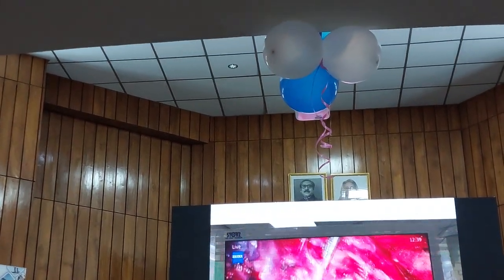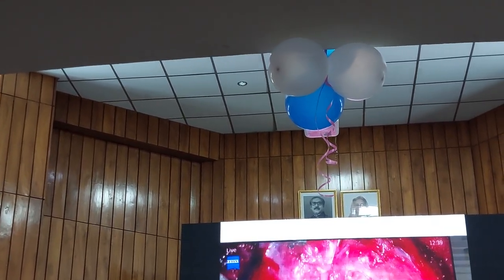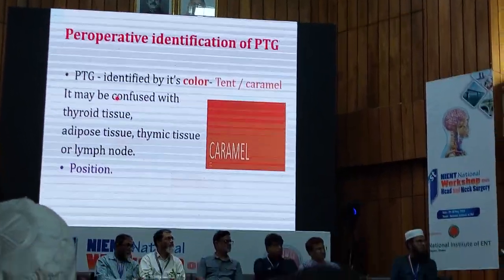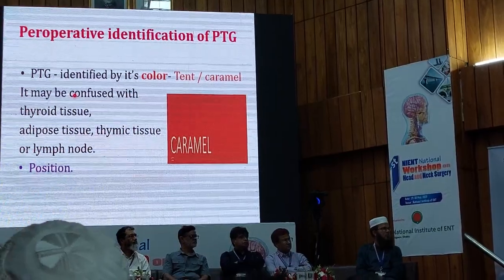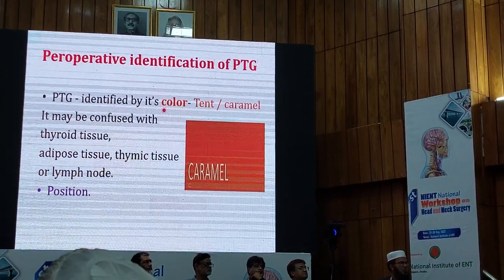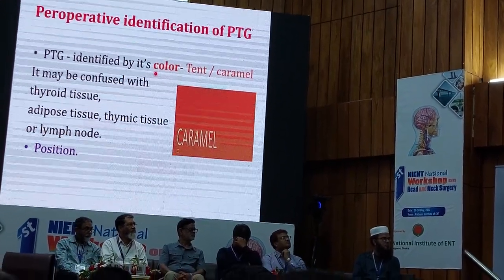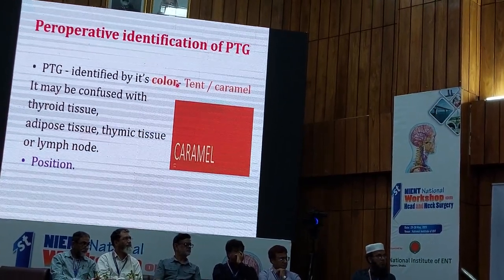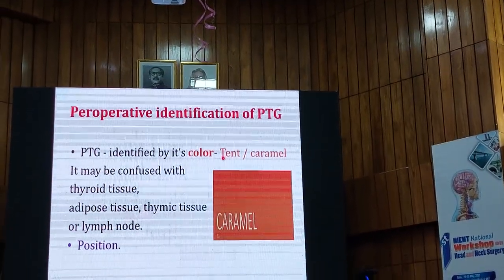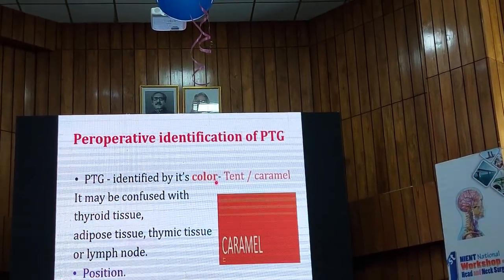Parathyroid can be identified either by color or by position. Usually it is a tan color. In younger people the color may be more brown, but in older people the parathyroid may become larger due to fat deposition. During level 6 dissection, your parathyroid may be confused with lymph nodes.